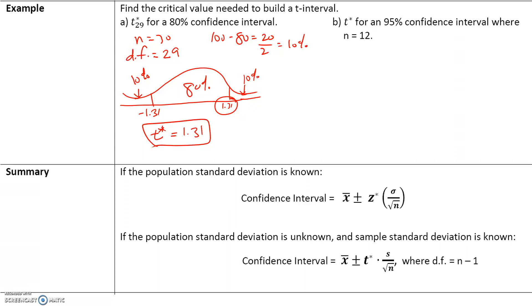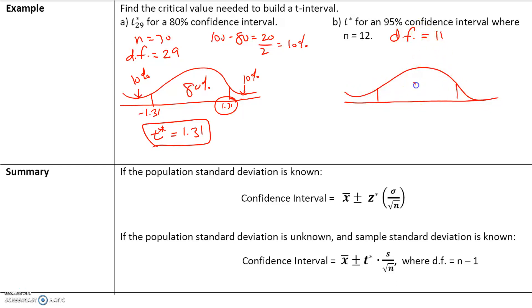Now let's find the critical value for a 95% confidence interval where n equals 12. If n equals 12, the degrees of freedom is 12 minus 1, or 11. It's a 95% confidence interval, so the area in the middle is 95%. Taking 100 minus 95 leaves 5%, split across two tails — 5 divided by 2 gives 2.5% in each tail. We just need the left tail, so let's go back to the calculator.